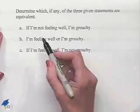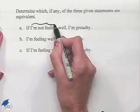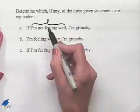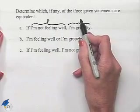We'll begin by designating I'm not feeling well as statement P. I'm grouchy we'll call statement Q.